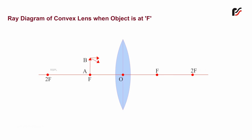a real, inverted, and enlarged image is formed at infinity. Here, U is negative, and V and F are positive.